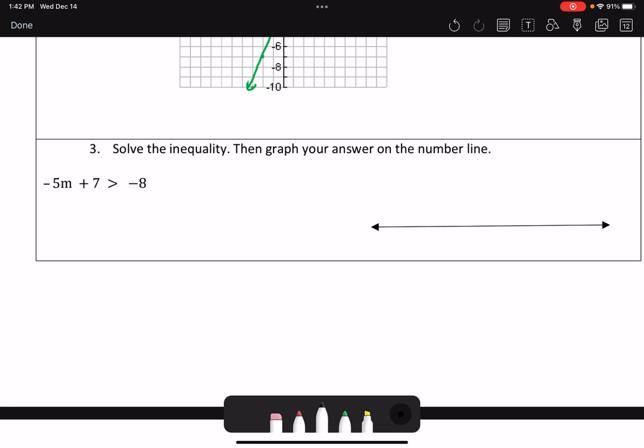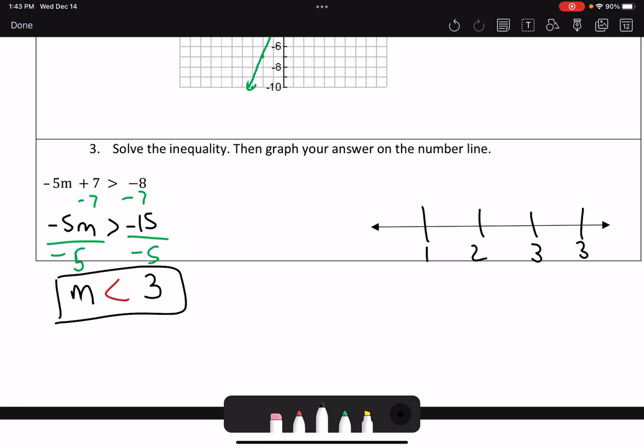Now, number 3 says solve the inequality, then graph your answer on the number line. I want to isolate the variable m. So my first step is to subtract 7 from both sides. This gives me negative 5m is greater than negative 15. Then I need to divide by negative 5. But guys, when we multiply or divide by a negative number with inequalities, that means we have to flip our inequality symbol. So this is going to give us that m is less than 3. Let's say I have 1, 2, 3, 4 here. So therefore, this is going to be an open circle. It's facing to the left because it's now less than 3.